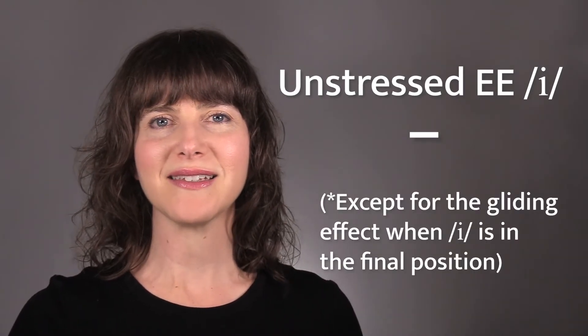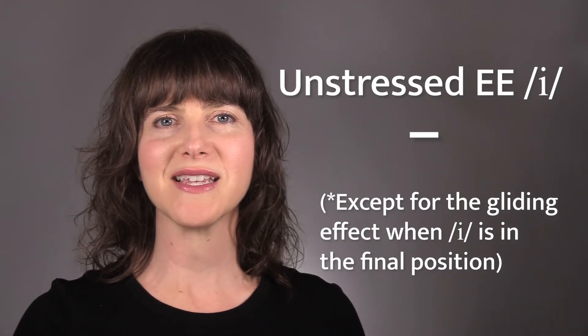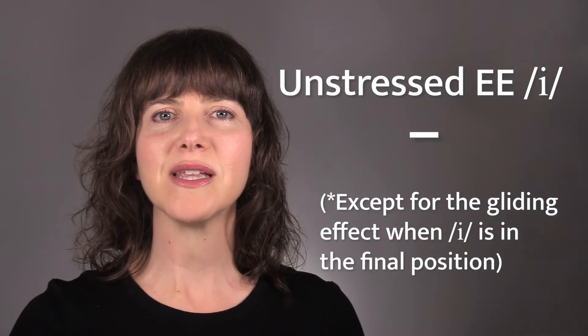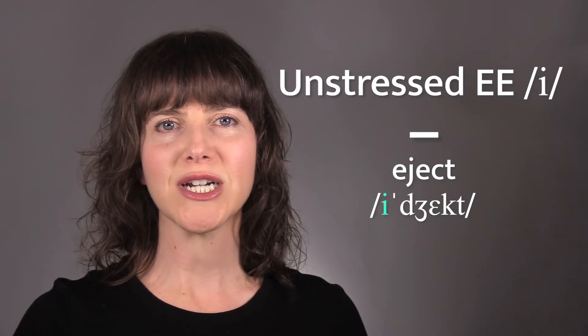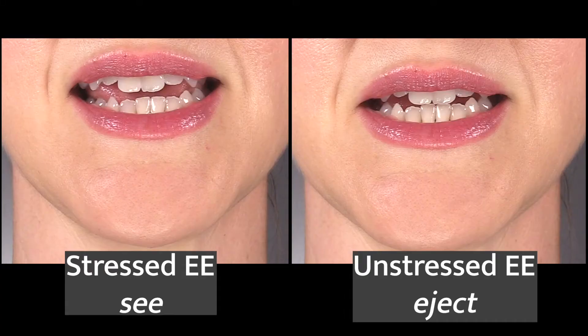But when E is in an unstressed syllable, the pitch of the voice is flatter and lower, and the vowel is said quicker. The E vowel is unstressed in the word 'eject'. On the left is the E vowel in the stressed position, like in the word 'see', and on the right is the E vowel in the unstressed position, like in the word 'eject'. Notice how the jaw is more closed in the unstressed position. The lips are also spread out less. The E vowel in 'eject' also does not have the gliding effect because it occurs at the beginning of a word.